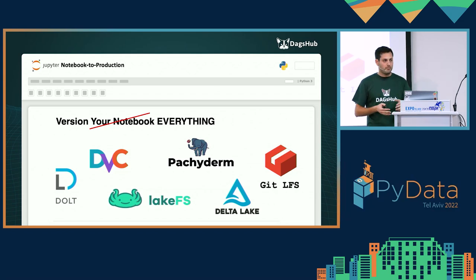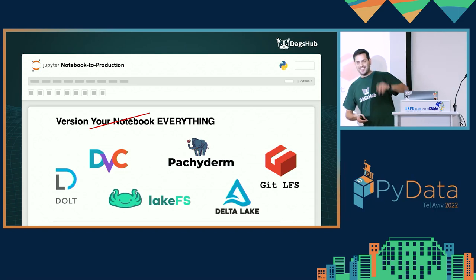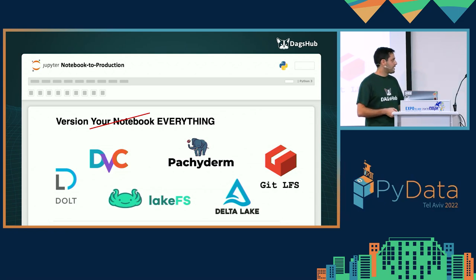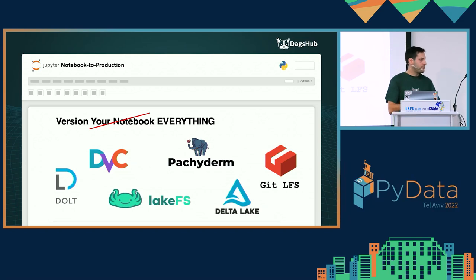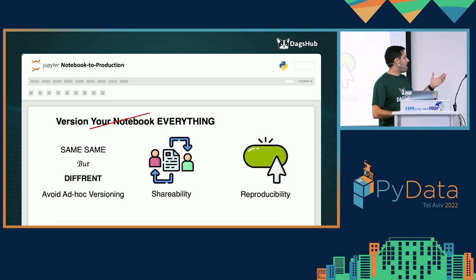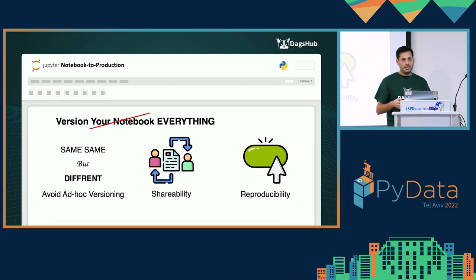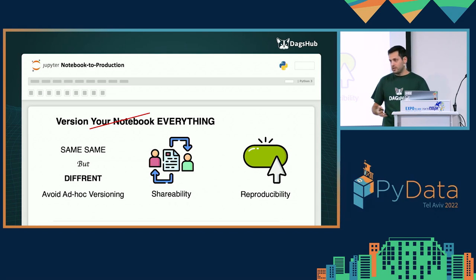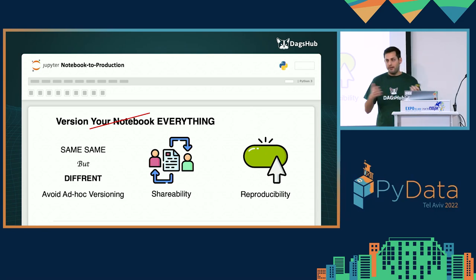For data versioning and large file versioning, a lot of tools have emerged in recent years. Some provide better solutions for unstructured data, others for tabular data. There are many great open-source tools — and some not open source — that help version large files. I recommend researching which tool fits your needs before injecting it into your pipeline. By versioning everything we avoid ad hoc versioning, can share large files easily within the team, and can reproduce our results because we know which dataset was used to train our model.